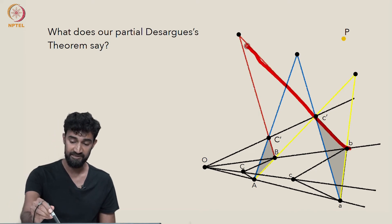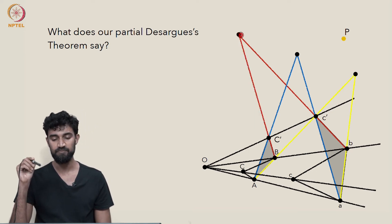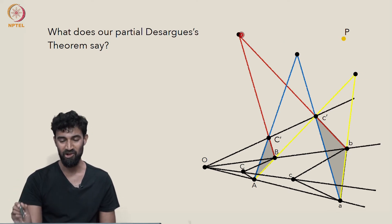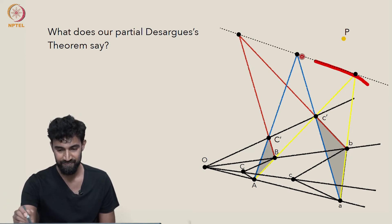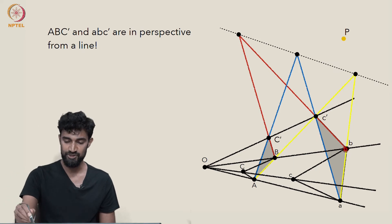And little B, c prime and capital B, capital C prime will meet somewhere. And moreover, these three somewheres all lie on a single line. They're all collinear. And that line is the axis of perspectivity for these two triangles.